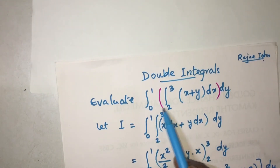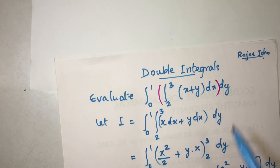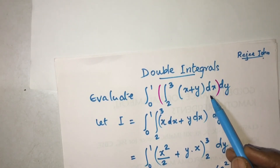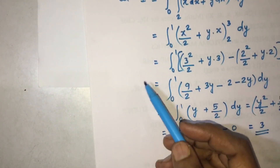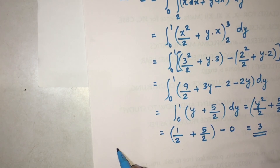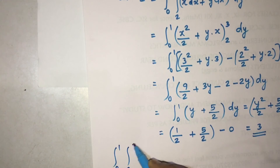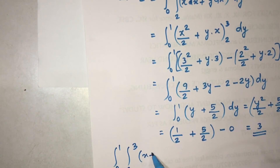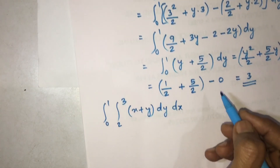Now, here the limits are constant numbers — both integrals have constant limits. So as I mentioned earlier, the order of integration doesn't matter here. Let's verify that. Suppose I write integral 0 to 1, integral 2 to 3, x plus y, dy dx — integrating with respect to y first and then with respect to x.